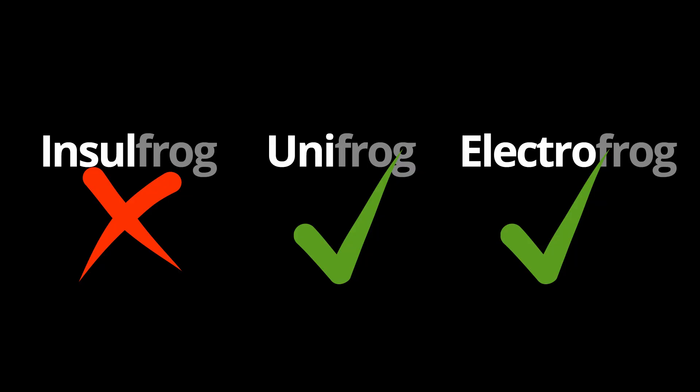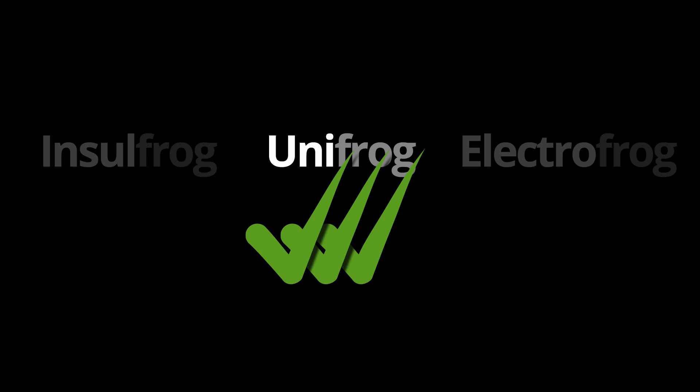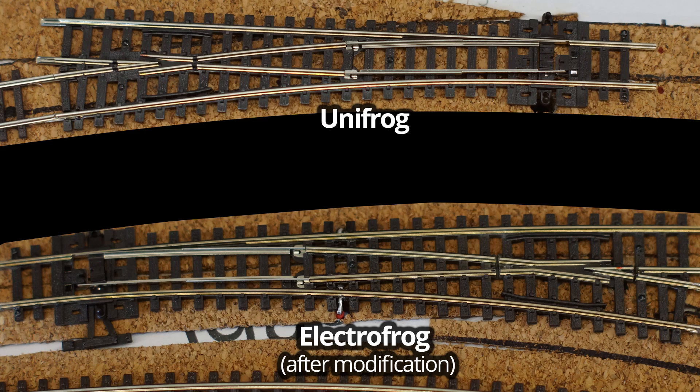Let's start by looking at the why. First of all, I'm not going to talk about insulfrog at all. For a reliable and low maintenance DCC layout, we'll be discussing electrofrogs and unifrogs. Here's the best tip of all: if you haven't purchased your turnouts yet, just buy unifrogs. I had about 20 electrofrogs already purchased, which is why I'm doing these modifications. What we're doing here is converting electrofrogs into unifrogs.